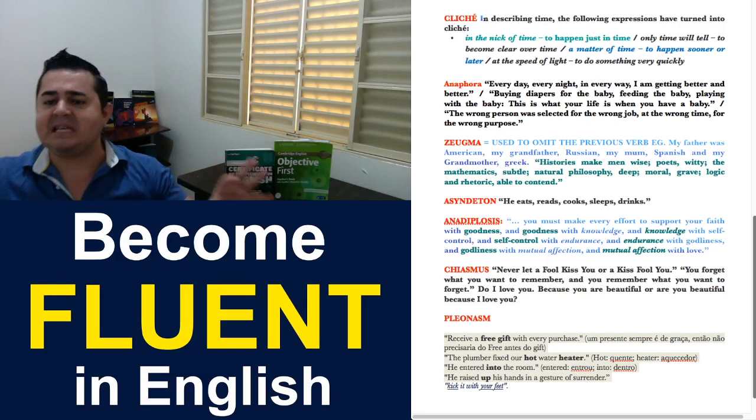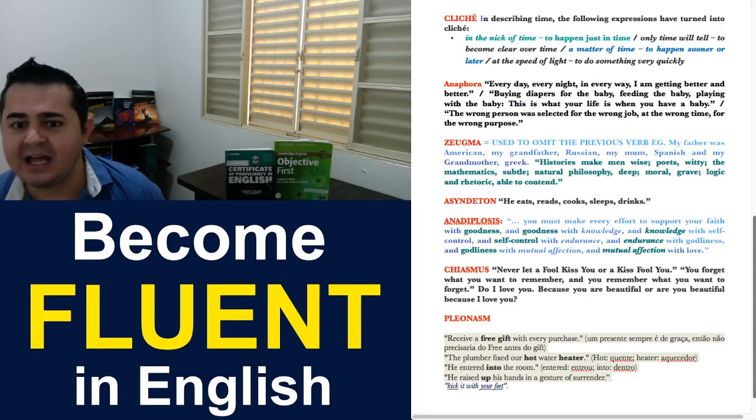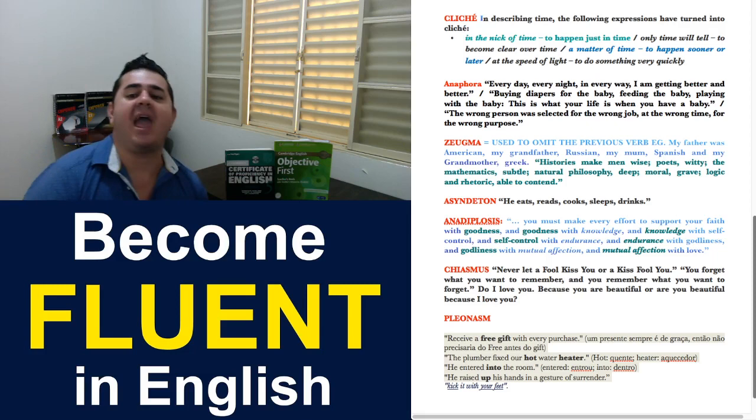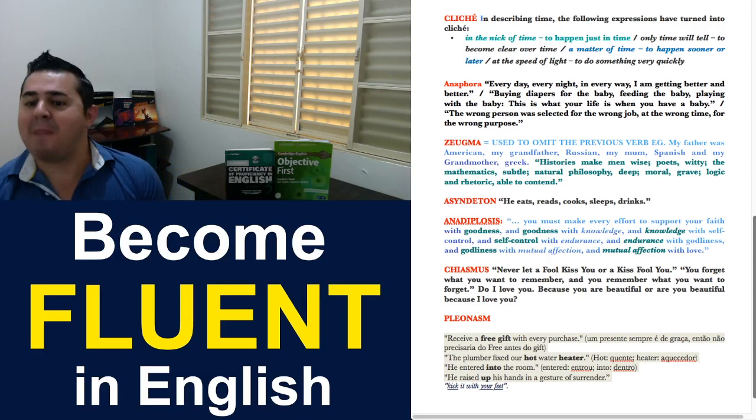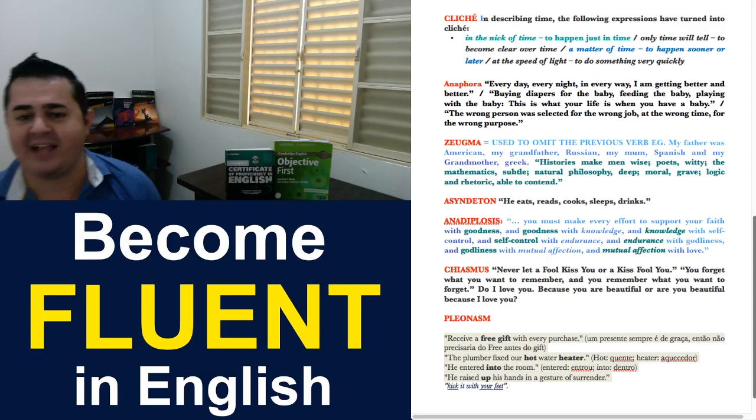So, by eliminating the previous verb, I'm using a zeugma. Another example: History is made man wise. Poets, witty. The mathematics, subtle. Natural philosophy, deep. Moral, grave. In this case, I'm eliminating the use of the verb to make. Like, history is made man wise. Poets make man witty. The mathematics make man subtle. Natural philosophy, deep. We don't need to use make, make, make, make, make. So, when we eliminate the previous verb, that in English is called zeugma. That's the right name.